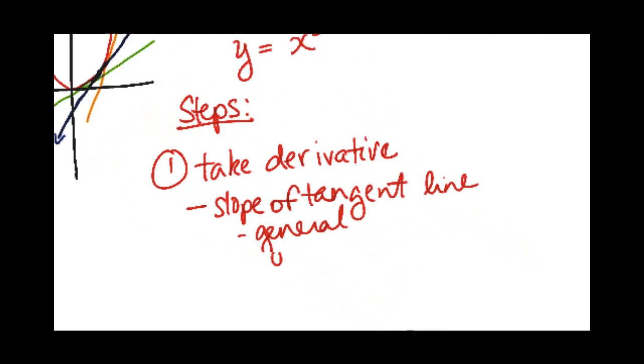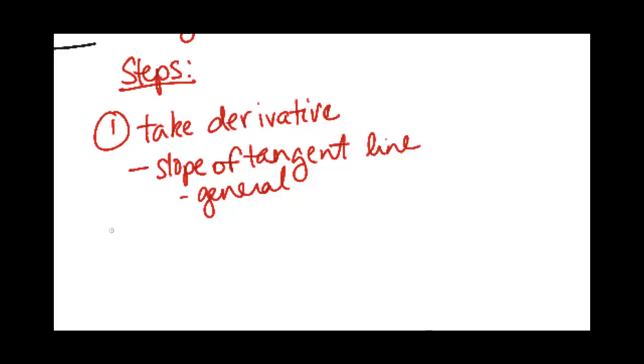And this will be a general slope for all X values. So step two will be to plug in your X value to get the specific slope of your tangent line that you're after.